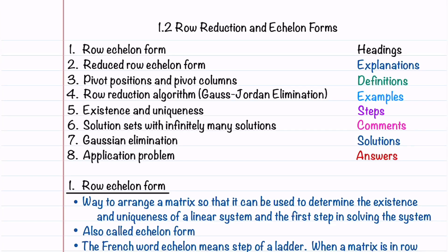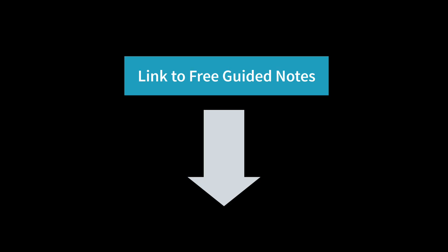Welcome to Understand the Math. This video is part of a series of videos on linear algebra and its applications and covers section 1.2 on row reduction and echelon forms. I'll teach you all about the eight topics listed here, and by the end of this video, you'll feel confident working these types of problems on your own. Be sure to check out the link below for free guided notes that you can highlight and fill in as you watch this video.